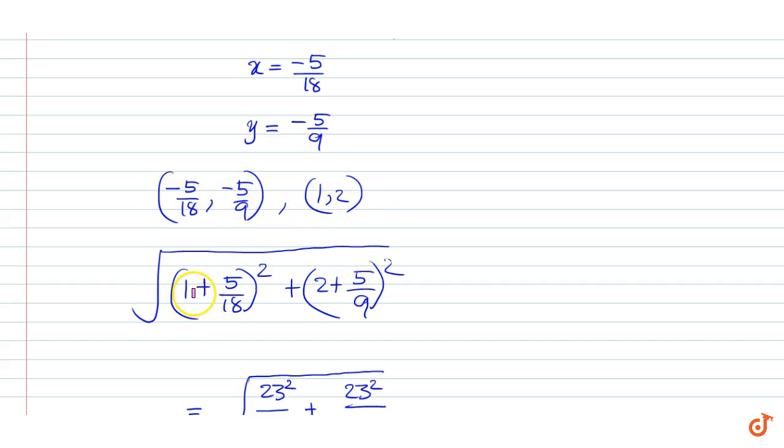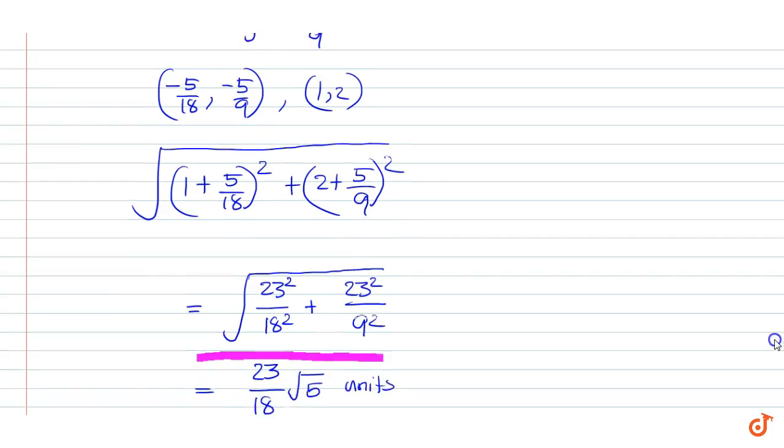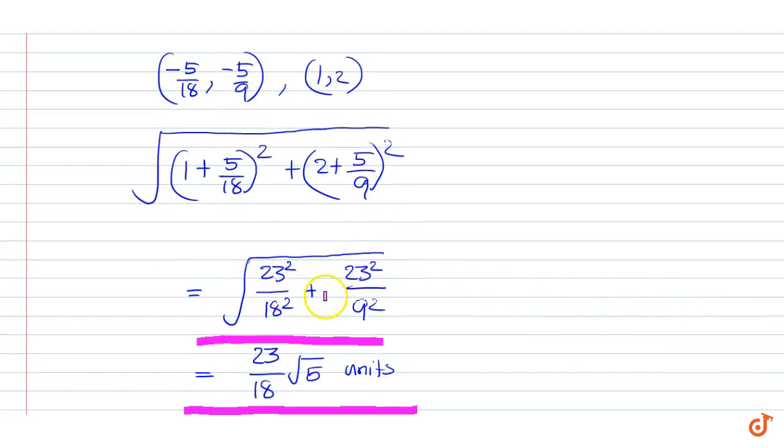The distance between the two points is the square root of (1 plus 5 by 18) squared plus (2 plus 5 by 9) squared. That is equal to the square root of (23 by 18) squared plus (23 by 9) squared.